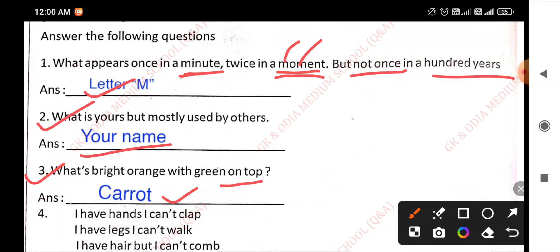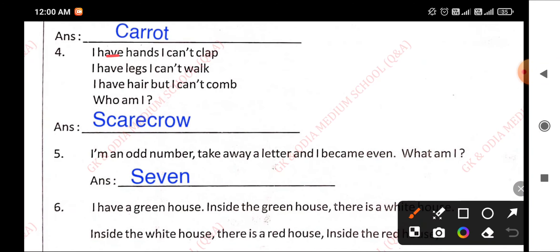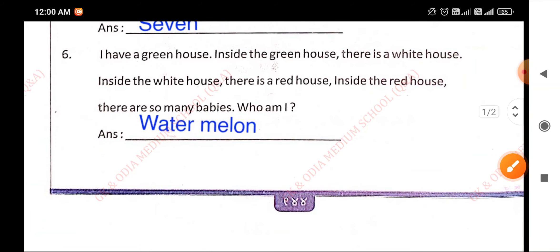Answer is carrot. Number 4: I have hands I cannot clap, I have legs I cannot walk, I have hair but I cannot comb. Who am I? Answer is scarecrow. Number 5: I am an odd number, take away a letter and I become even. What am I? Answer is seven. Remove S and it becomes even.